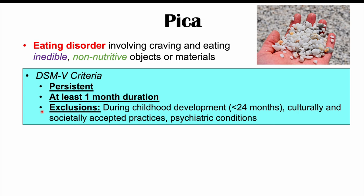There are exclusionary criteria in the DSM-5 diagnostic criteria. In children below the age of 24 months — two years or younger — if they are eating inedible objects, we would exclude them from a pica diagnosis. There are also cultural and societal practices that involve eating things that are inedible, and if those individuals are part of a culture that accepts those practices, that is also used as an exclusionary criteria, meaning they don't have pica.